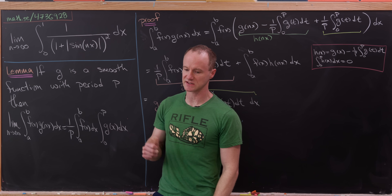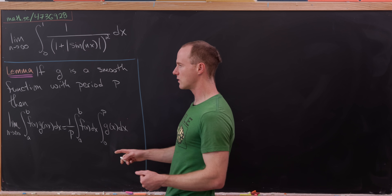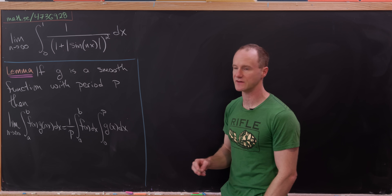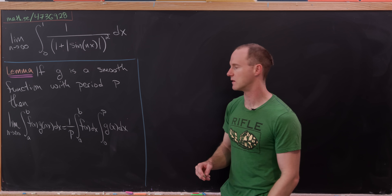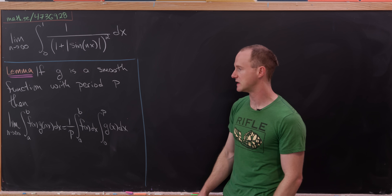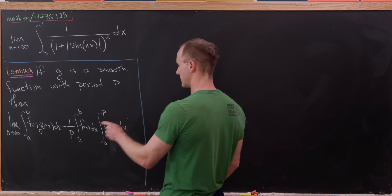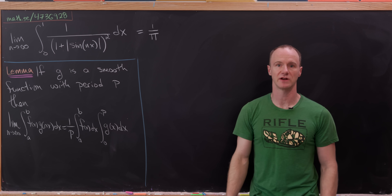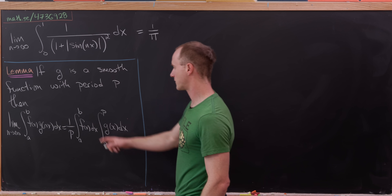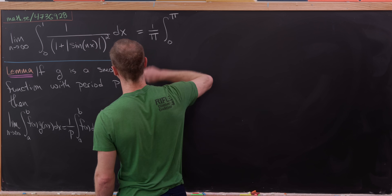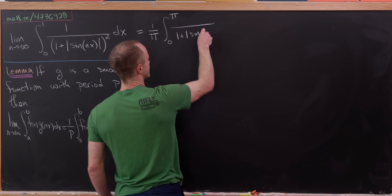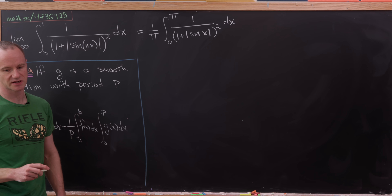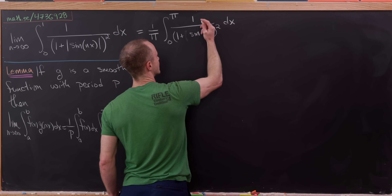Now let's use this lemma to evaluate our original limit. The entire function inside the integral is the g of nx function, and f is simply 1, integrating from 0 to 1. So the result equals 1 over pi — since the period of the absolute value of sine is pi — times the integral from 0 to 1 of 1, times the integral from 0 to pi of 1 over (1 plus the absolute value of sine of x) squared. Between 0 and pi, sine is positive, so we can drop the absolute value.